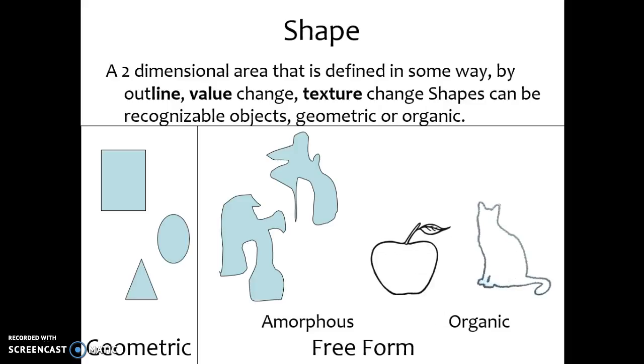Organic, if you think like the grocery store, these are outlines of living things. So the example on the screen, the apple or the outline of a cat, think silhouette-type shapes.